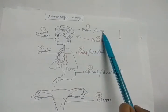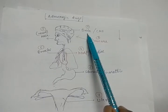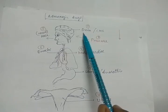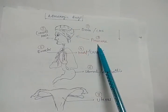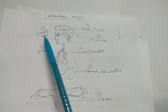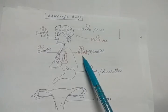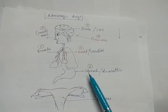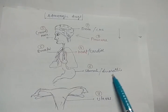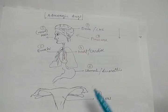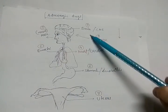In the diagram: number one is a brain, correlating with CNS; number two is a pressure agent; number three is a nose, representing nasal; number four is a heart, representing cardiac; number five is bronchi; number six is the stomach, correlating with anorectics — agents which cause loss of appetite; and number seven is the uterus for uterine relaxant.